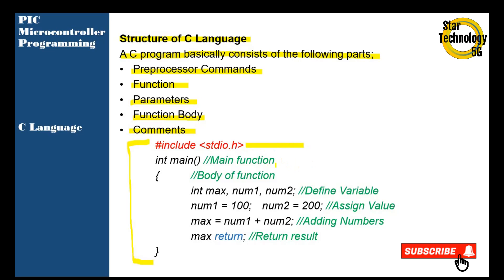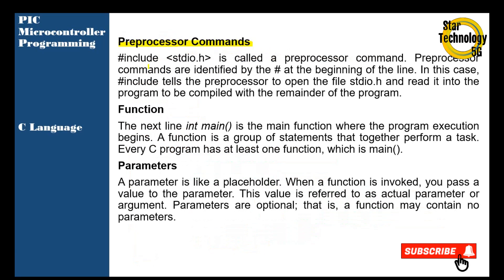Here is the preprocessor command, here is the main function, here is the body of the function. Here we define a variable, here we assign a value to a variable, here we add a number to the variable, and this is where we return the value. The preprocessor command hash include stdio.h is called a preprocessor command.